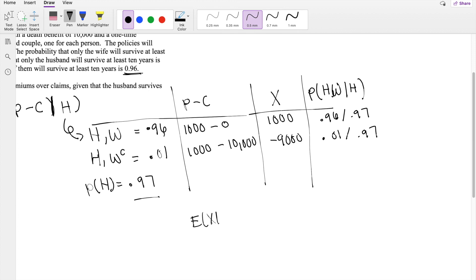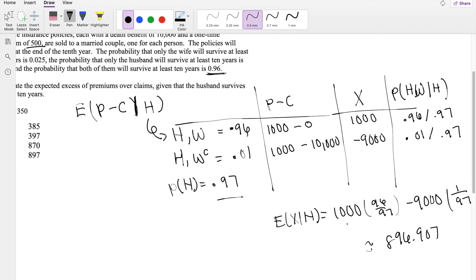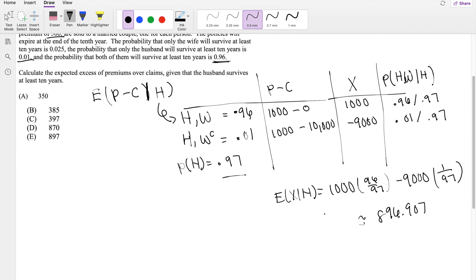So then solving this out, the expectation of X given H is equal to 1,000 times 96 over 97, minus 9,000 times 1 over 97. And this is approximately equal to 896.907, which is our answer E.